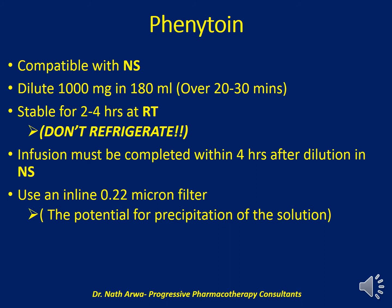Phenytoin is compatible with normal saline — avoid using 5% dextrose. We should dilute 1 g in 180 ml of normal saline, homogenize, and infuse over 20 to 30 minutes. Such a solution is stable for 2 to 4 hours at room temperature and should never be refrigerated. The infusion must be completed within 4 hours after dilution. It is also recommended to use an inline 0.22 micron filter because of the remote potential for precipitation due to its instability at room temperature.